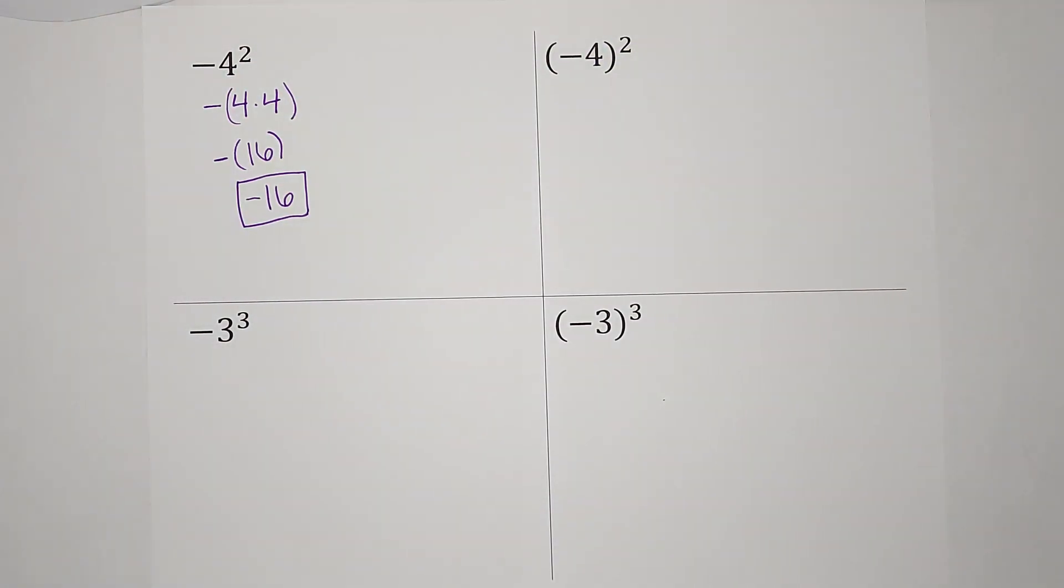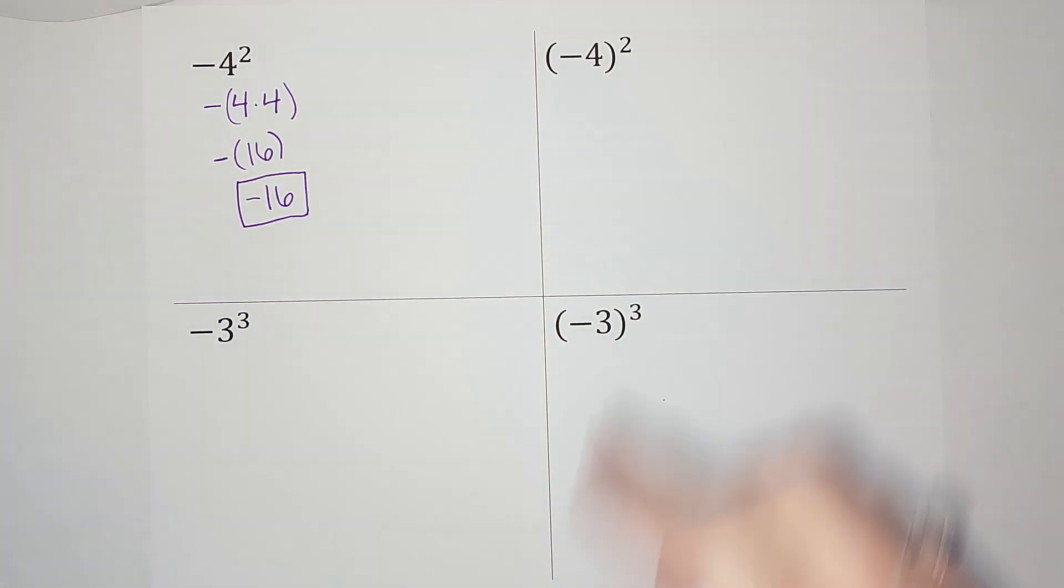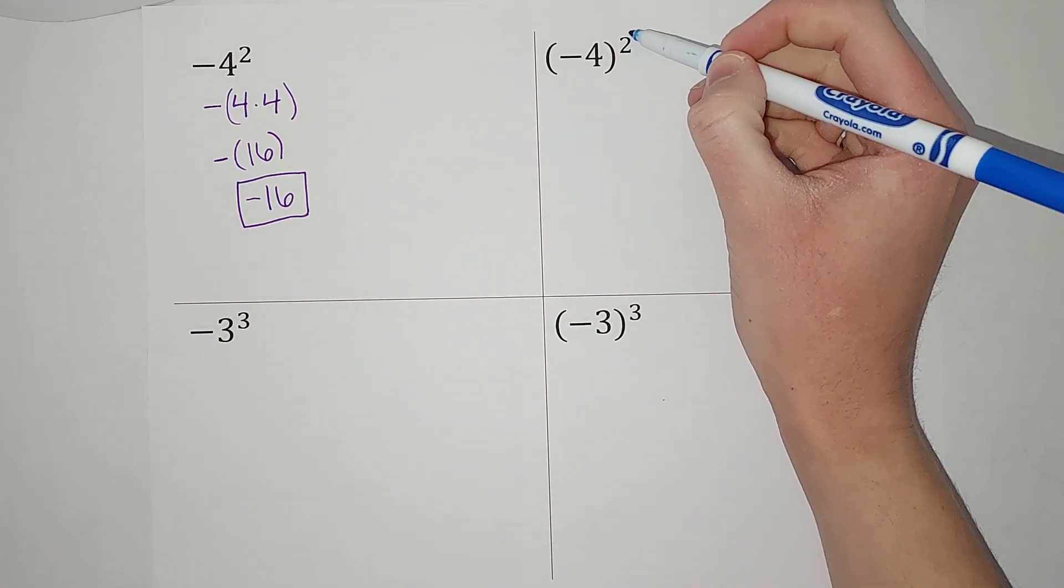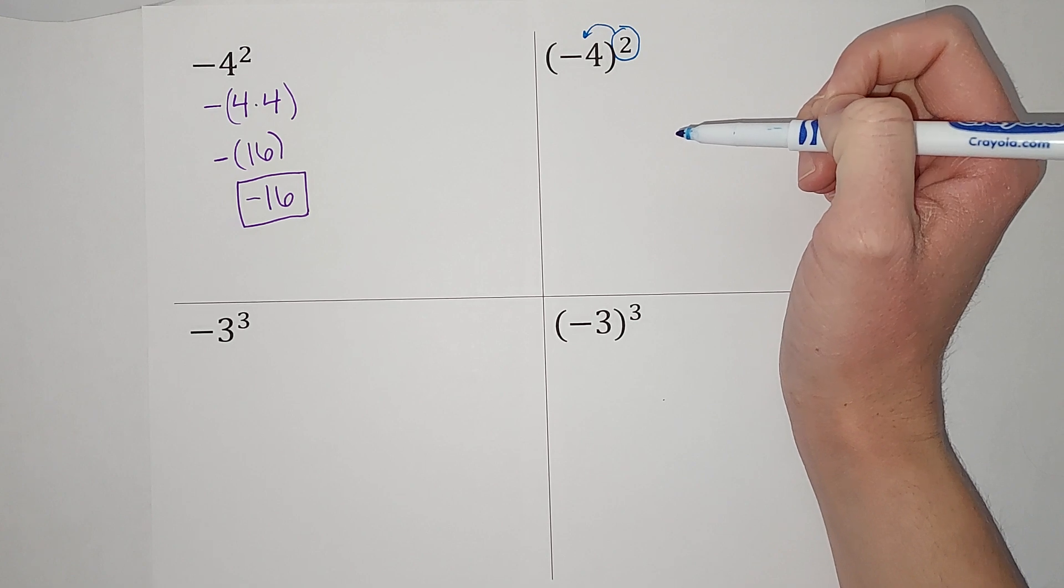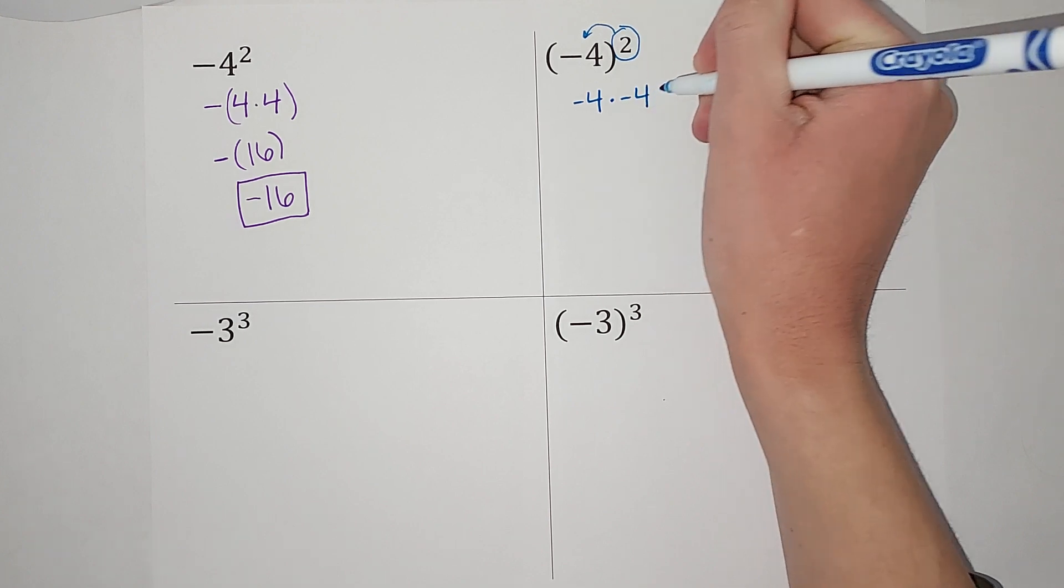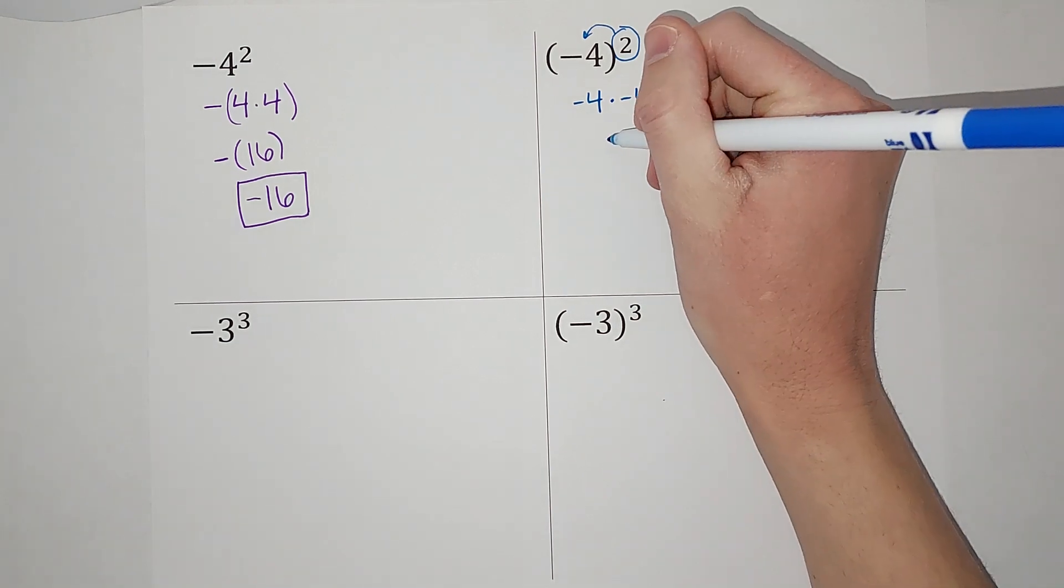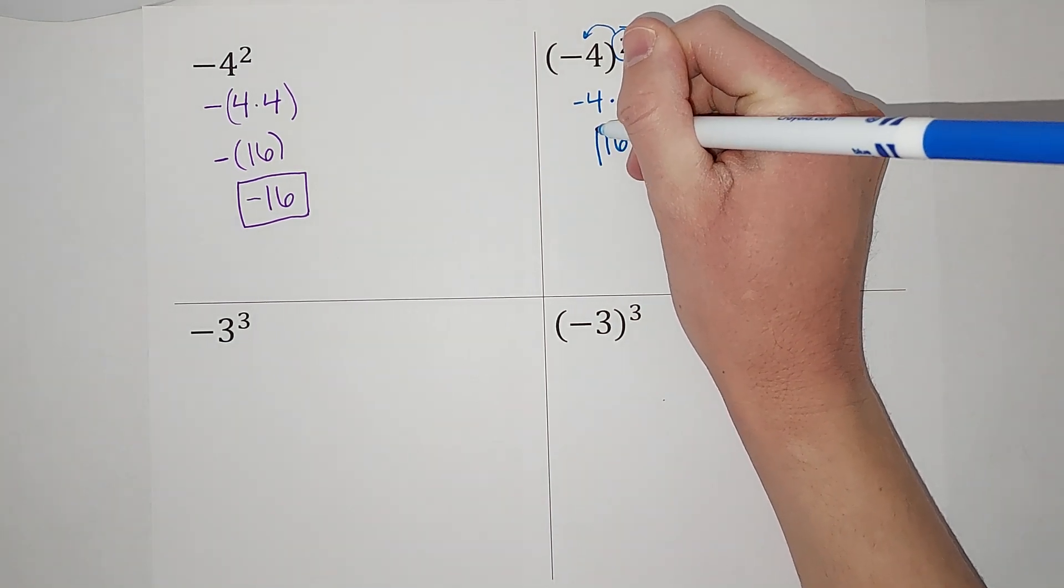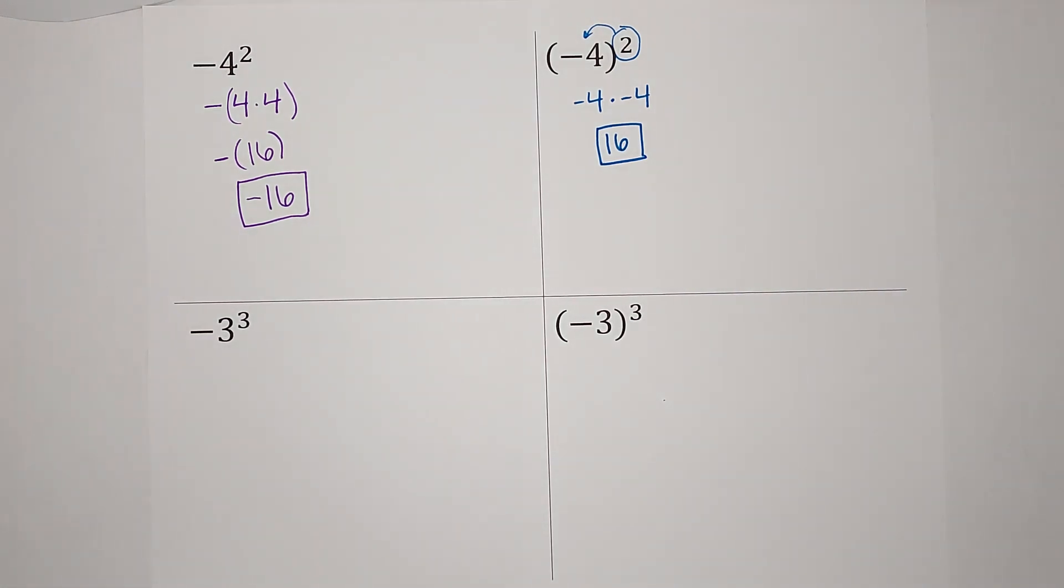Now, look how it is a little bit different when the parentheses include the negative. When they include the negative, my squared applies to the negative as well. So then it is negative four times negative four. I know that a negative times a negative gives me a positive, so my answer is positive 16. So it almost looks like the same problem, but my answers are different, right? Because in one scenario, the squared applies to the negative. In one, it doesn't.